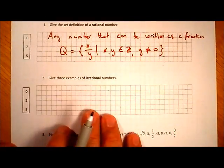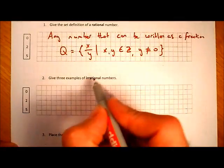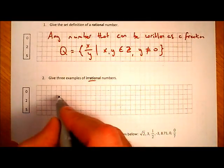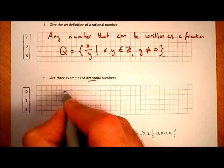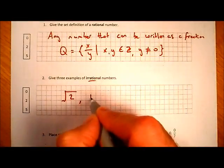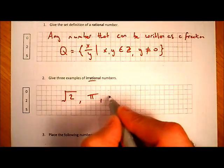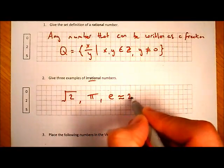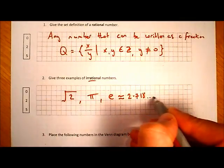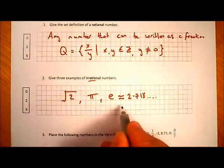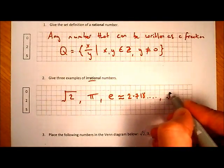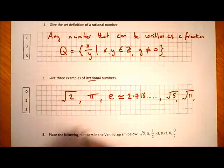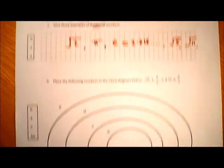Second question: give three examples of irrational numbers. An irrational number is a number that cannot be written as a fraction. Three examples would be: the square root of 2, pi, and the number e — which is close to 2.718 and goes on forever. The square root of 5 and the square root of 11 are also irrational.